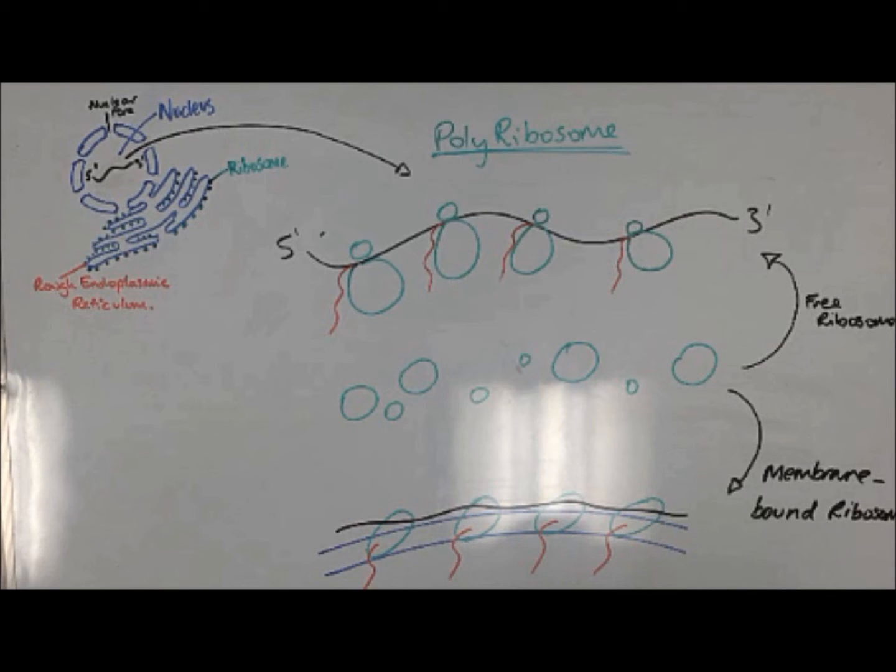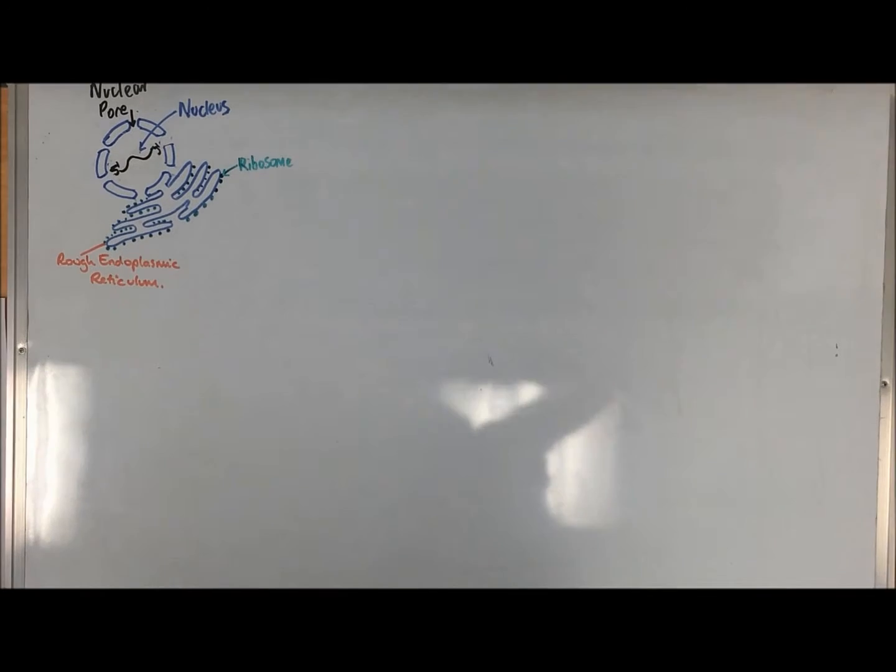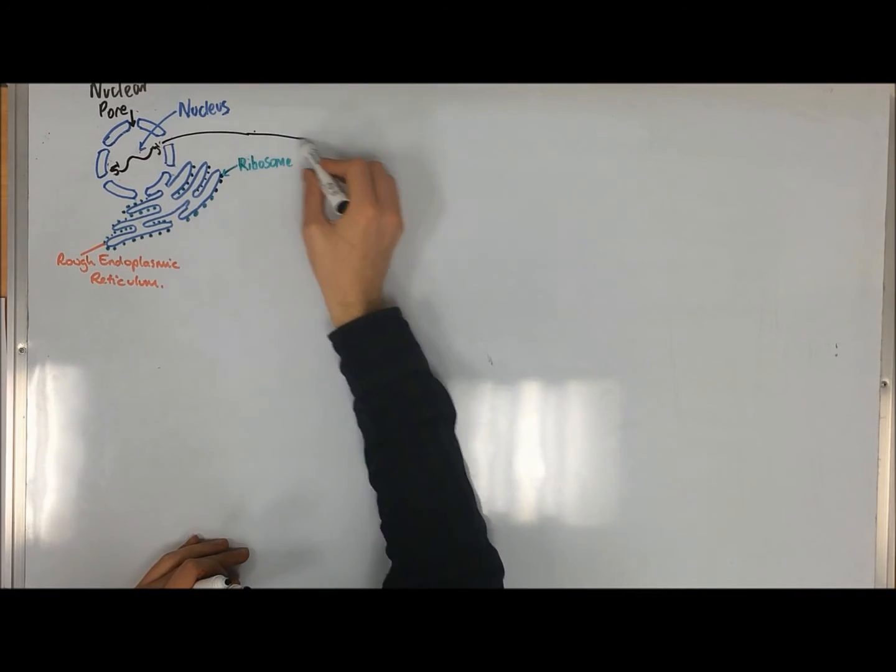Membrane-bound ribosomes synthesize proteins that are translocated into the lumen of the ER, also known as water-soluble proteins and transmembrane proteins, which are permanently membrane-bound. Ribosomes that are membrane-bound give the rough endoplasmic reticulum its distinct feature.